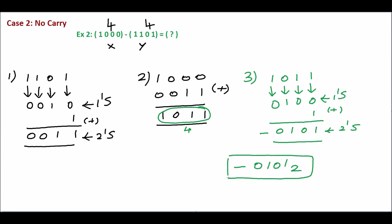So the final answer is minus 0, 1, 0, 1 base 2. We will cross-check this. X is 1, 0, 0 which is equivalent to 8. Y is 1, 1, 0, 1 which is 1, 2, 4, 8 — total 13. So 8 minus 13 should be minus 5. Our final answer is 0, 1, 0, 1 which is 5, so minus 5. The answer is right.